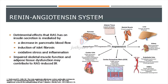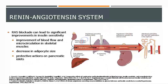The renin-angiotensin system (RAS) has detrimental effects on insulin secretion mediated by reduction in pancreatic blood flow, induction of islet cell fibrosis, and oxidative stress and inflammation. Hence, RAS blockade improves blood flow and microcirculation in skeletal muscles, reduces adipocyte size, and protects pancreatic beta cells.